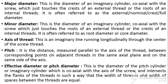First, major diameter — this is the diameter of an imaginary cylinder coaxial with the screw which just touches the crests of an external thread or roots of an internal thread. It is often referred to as the nominal, crest, or full diameter. Next, minor diameter — this is the diameter of an imaginary cylinder coaxial with the screw which just touches the roots of an external thread or the crests of an internal thread. It is often referred to as the root or core diameter.